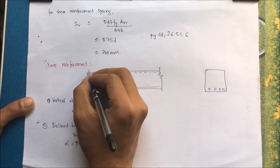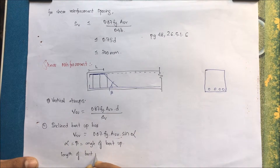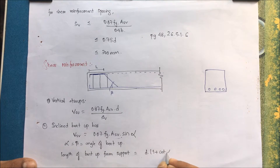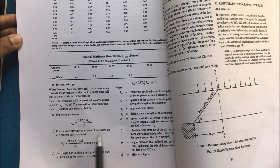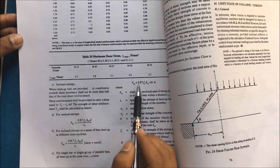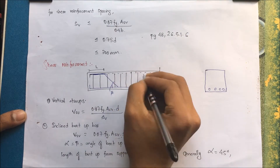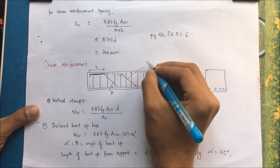The shear strength of the bent-up bar is 0.87 × fy × Asv × sin α, where alpha is the angle of inclination. The bent-up is provided at a distance l from the support, where l equals d(1 + cot α). Generally alpha is taken as 45 degrees. Inclined stirrups are another type, with shear strength calculated as per the IS code.